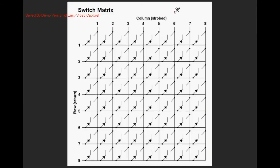Here's our switch matrix at the top. We have eight columns also called the strobe or send lines and on the left we have eight rows also called the return line.